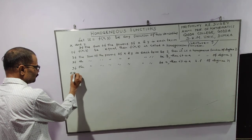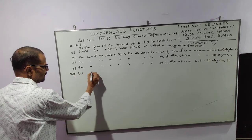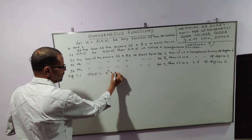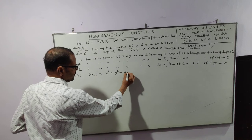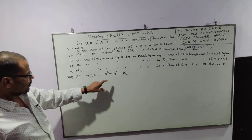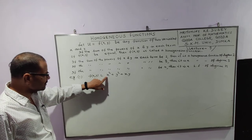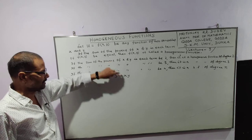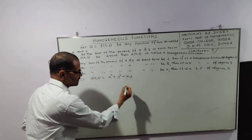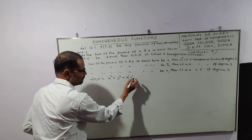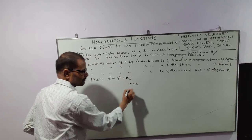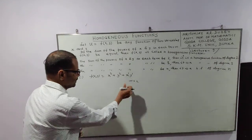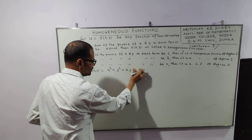We can use example number one. f(x,y) is equal to x squared plus y squared plus xy. This is a homogeneous function of degree 2, because the first term is x squared, second term is y squared, and third term is xy. This means that f(x,y) is a homogeneous function of order 2.